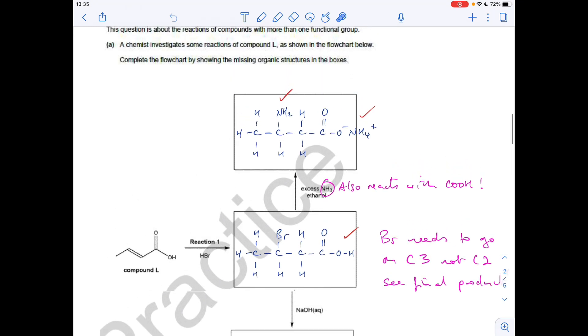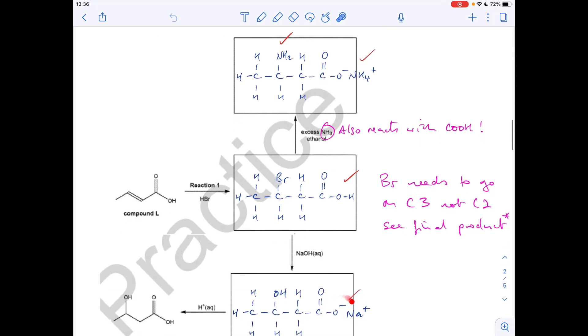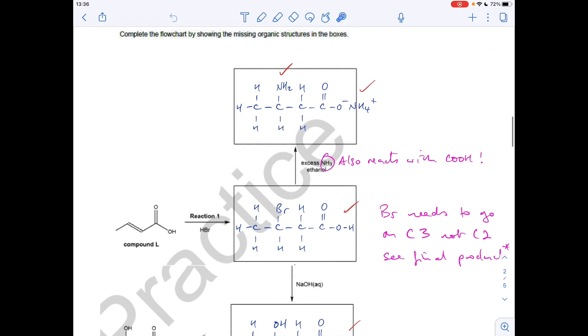And then if we go up from here, it's reacting with excess ammonia and ethanol. So as well as a substitution of this Br for an NH2 group, we're also going to get a reaction between the ammonia. Remember, it's a proton acceptor. So we can accept that H plus there, turn it into an ammonium ion, and basically form a salt, a bit like we had there. So we get this here.